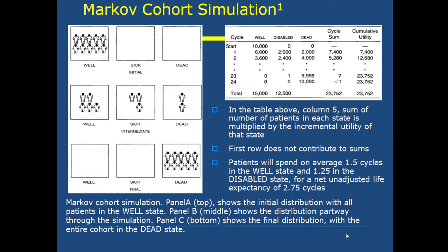Panel A shows the initial distribution with all patients in the well state. Panel B shows the distribution pathway through the simulation, where patients are divided into three groups: some remain well, some become disabled, and some die. Panel C shows the final distribution with the entire cohort in the dead state.